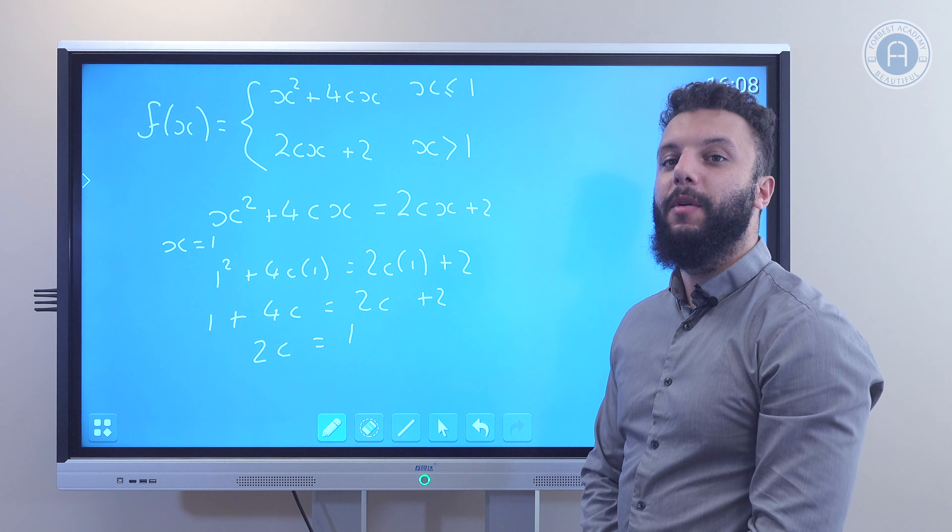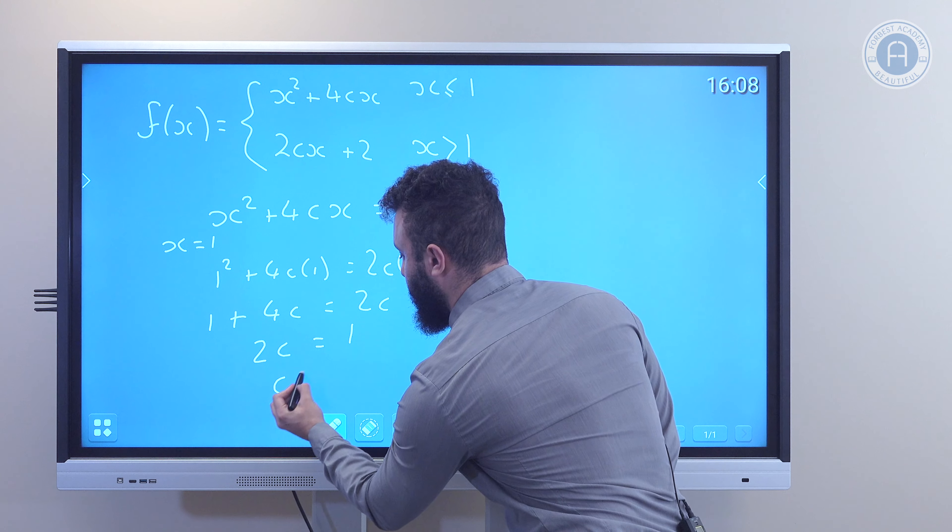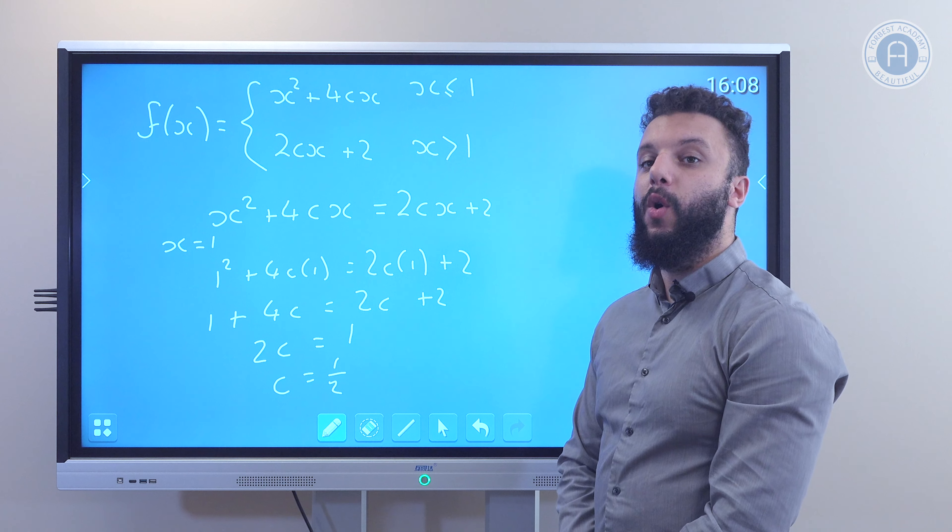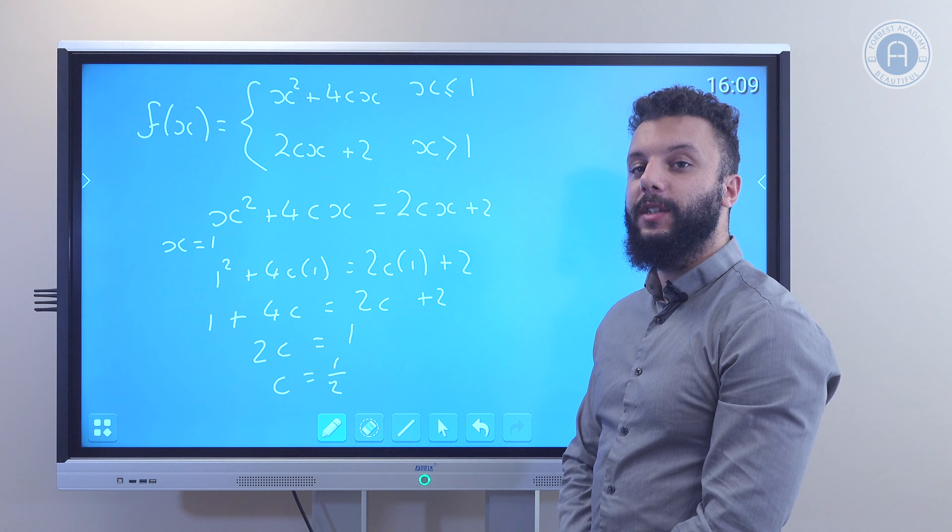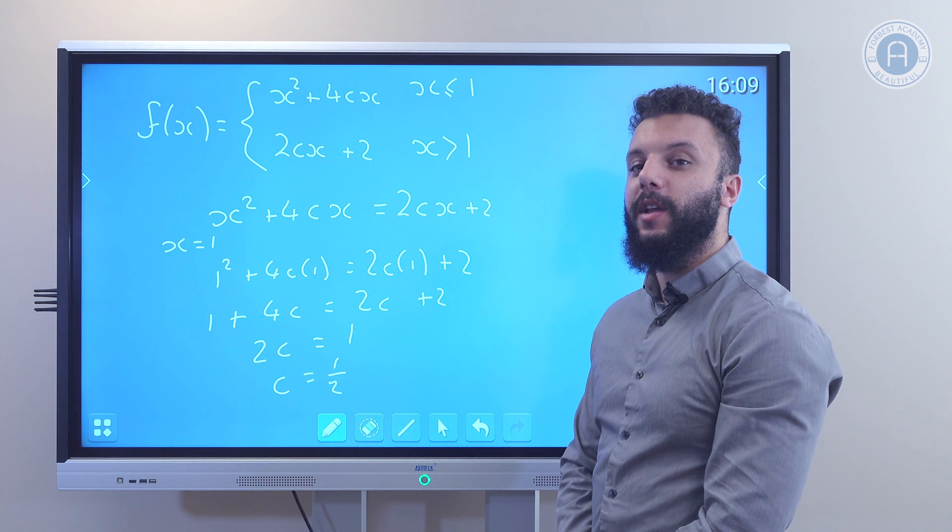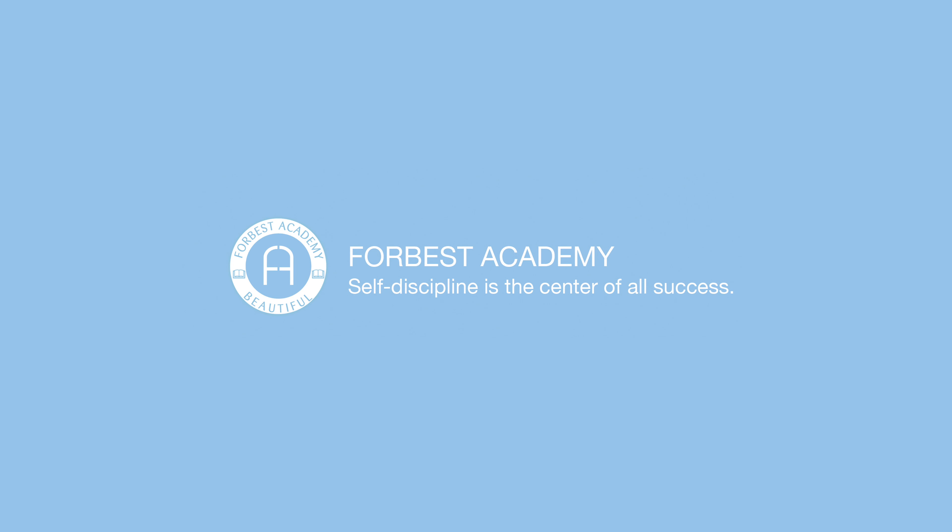And the next thing I do is put the value x equals 1 into these. So I have 1 squared, which is 1, plus 4c is equal to 2c plus 2.